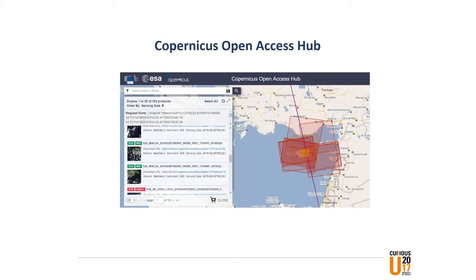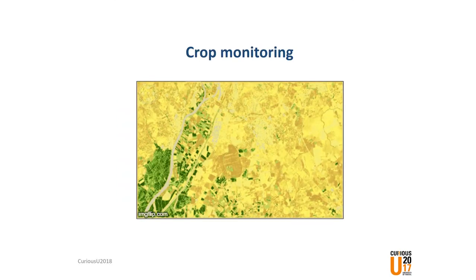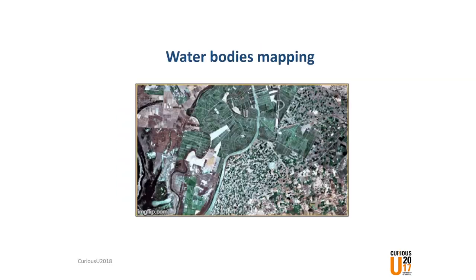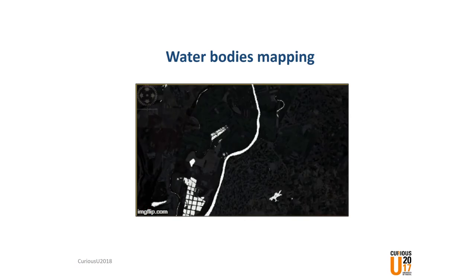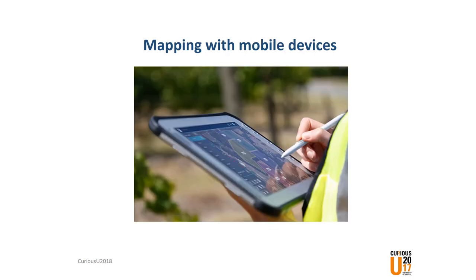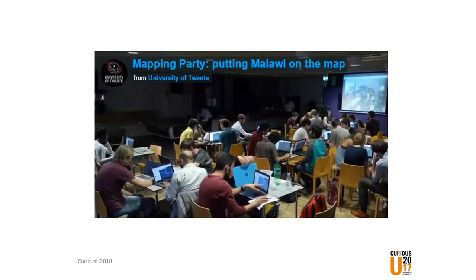In addition, you will practice how to download free imagery and how to use it to monitor fires, crops or vegetation, or for water bodies detection. You will also have the chance to practice mapping features using your mobile phone or tablet, and we will close the program with a mapping party. Don't miss it!